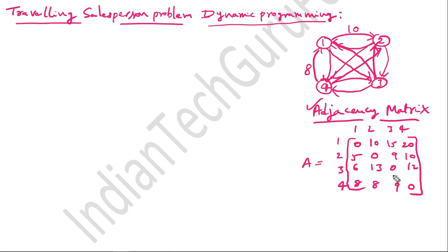Now, what we need to find: starting from vertex 1, the salesperson must come back to the same vertex, traversing through all different vertices — that is, he needs to cover all three other locations: second, third, and fourth — and then return to the first location with minimum distance. That is the solution we are looking for. Let us write down all the possible paths starting from vertex 1.